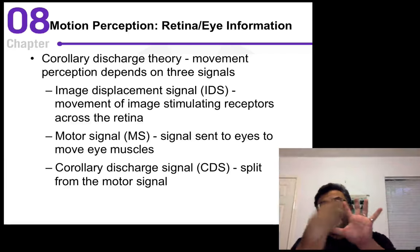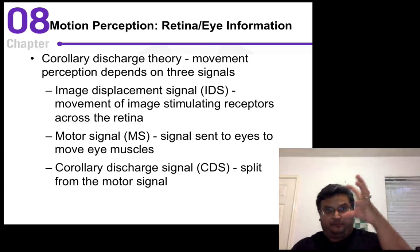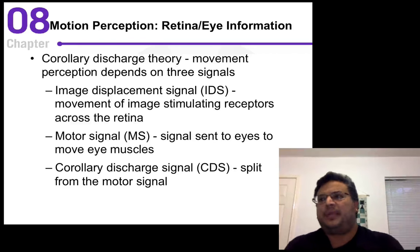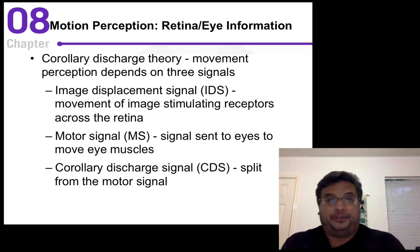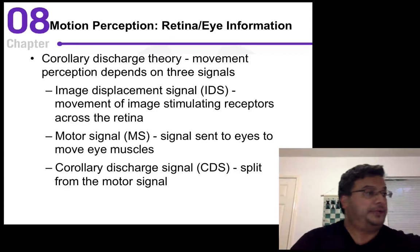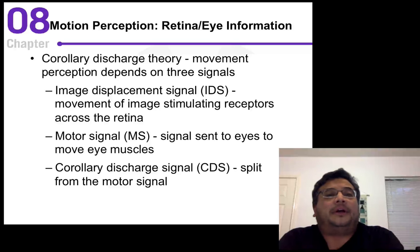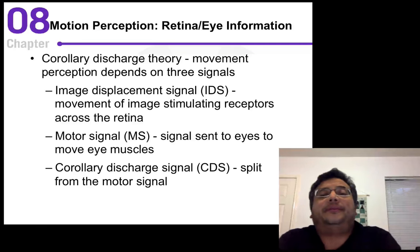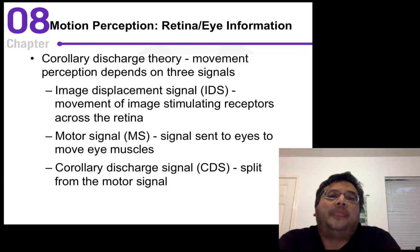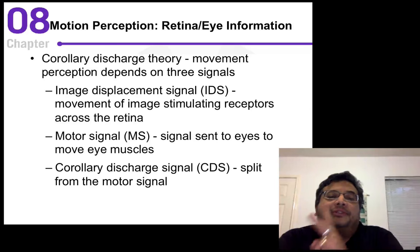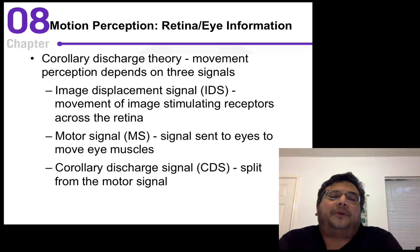One theory that's been put forth to describe the relationship between the images on the retina and the movement of the eyeball is corollary discharge theory. The discussion of that theory begins on page 183 of your textbook. Corollary discharge theory postulates that there are three separate signals that go into the brain — into a detector — that help us determine if there's movement.